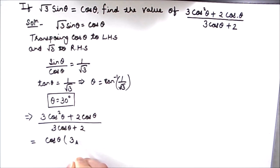So we are left with 3 cos theta plus 2 divided by 3 cos theta plus 2.